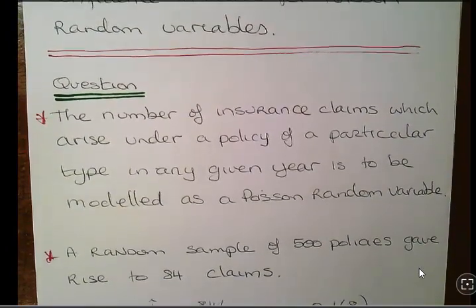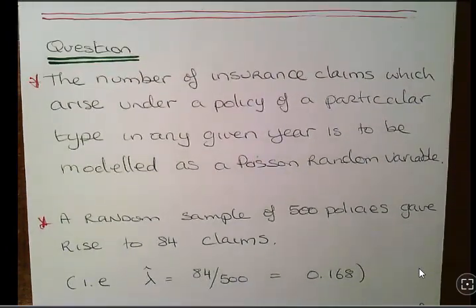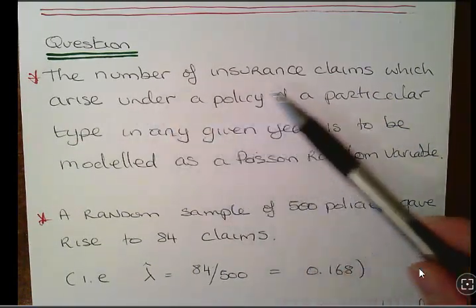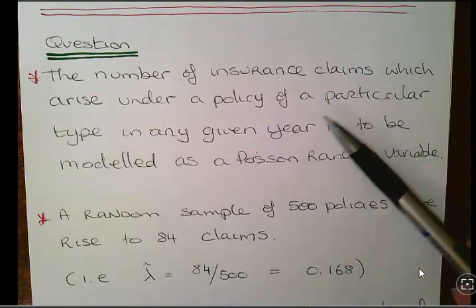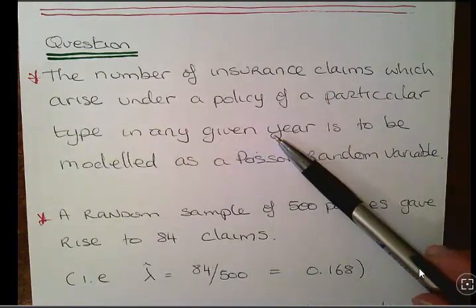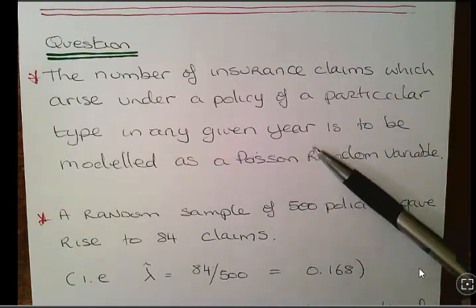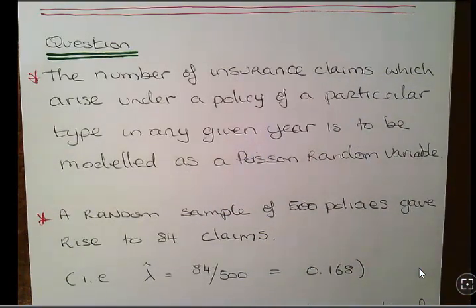Now this might be of interest to you if you're interested in dispersion or over dispersion. The question is: the number of insurance claims which arise under a policy of a particular type in any given calendar year is to be modeled as a Poisson random variable. This type of thing is actually quite common in actuarial types of analysis.